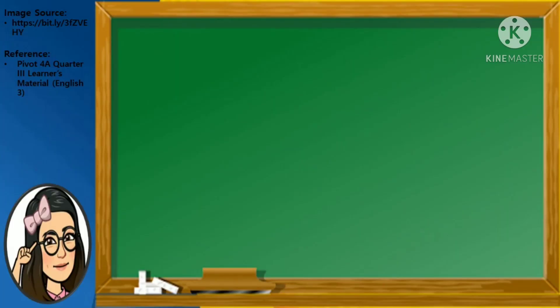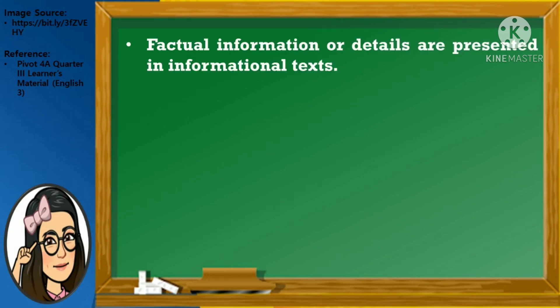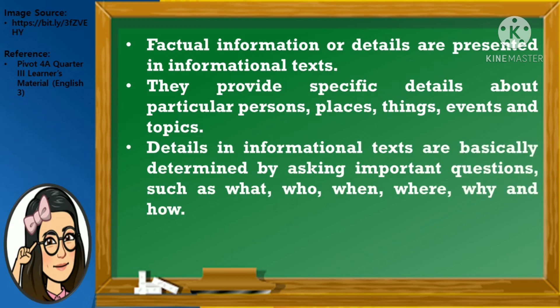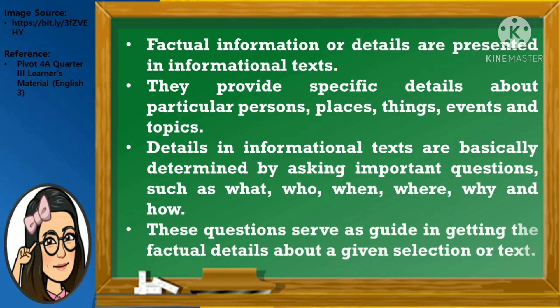Let us review once again the details in the informational text. Factual information or details are presented in informational text. These texts provide specific details about particular persons, places, things, events, and topics. Details in informational texts are basically determined by asking important questions such as what, who, when, where, why, and how. These questions serve as a guide in getting the factual details about a given selection or text.